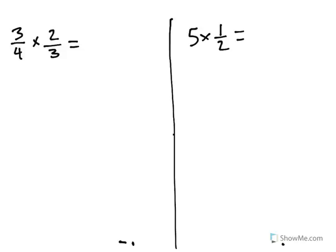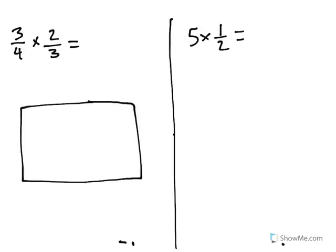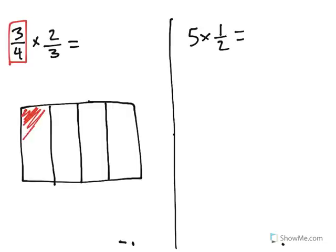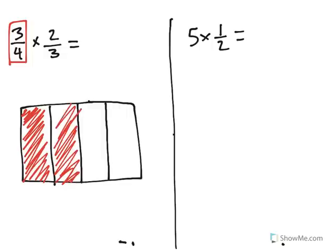Here's what it looks like when we represent it. I'm going to start by representing this as 3 fourths. So I'm going to break this into 4 equal pieces and shade in 3 of them, shading the 3 fourths in red.